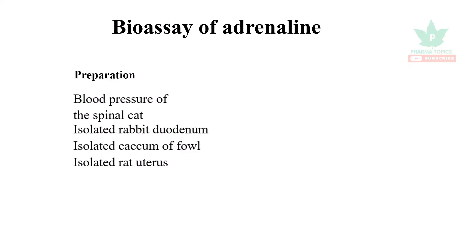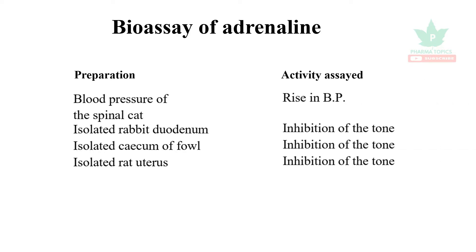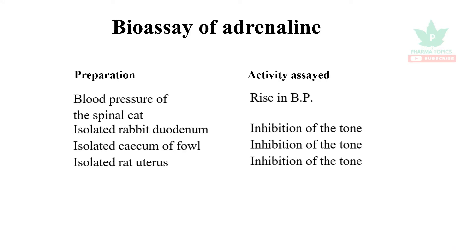Welcome to our Pharma Topics channel. Our topic of discussion is the bioassay of adrenaline. The preparations used include blood pressure determination in the dog as well as the spinal cat. Isolated tissues can also be used, including isolated rabbit duodenum, isolated cecum of the fowl, and isolated rat uterus.